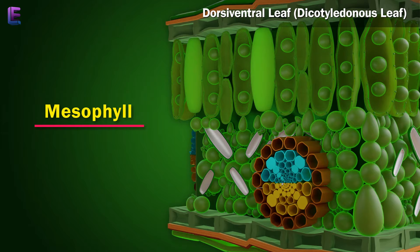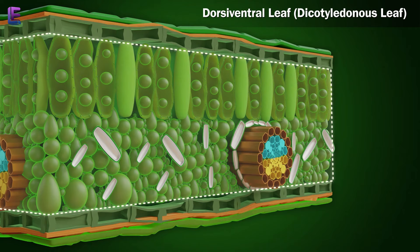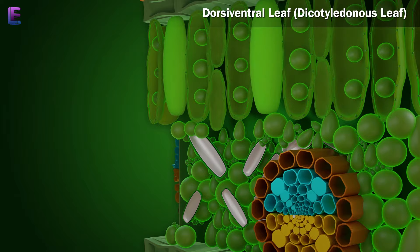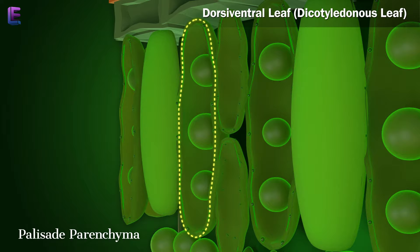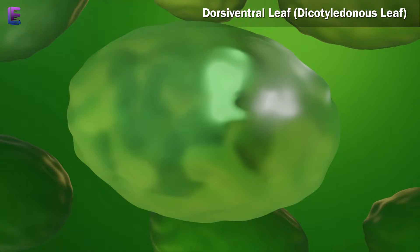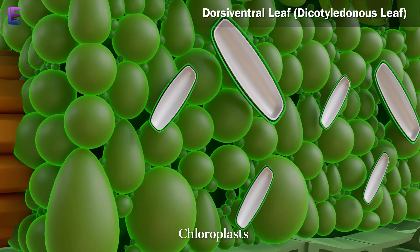2. Mesophyll: The tissue between the upper and lower epidermis is called the mesophyll. It has two parts: the palisade parenchyma and the spongy parenchyma. The cells of the palisade parenchyma are elongated and vertical, and have a large number of chloroplasts which take part in photosynthesis. The cells in the spongy parenchyma are arranged randomly, have fewer chloroplasts, and mainly help in gaseous exchange.